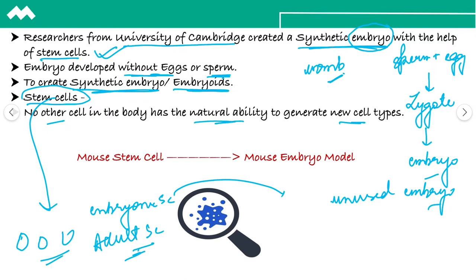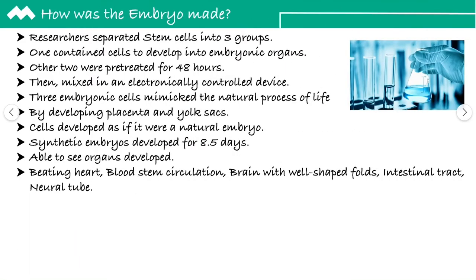So, kya kiya scientists ne? Here, they used the mouse stem cells. Mouse stem cells ka use karke, they formed the mouse embryo model under laboratory conditions. Researchers ne jo hai, stem cells ko separate kiya hai tene groups ke andar.